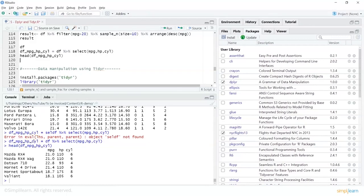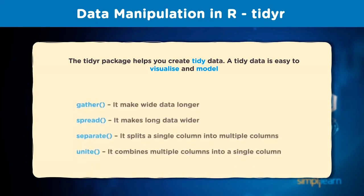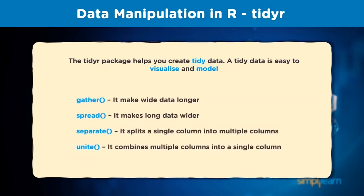There is also a package called tidyr, and we'll see how data manipulation can be done using it. The tidyr package makes it easy to tidy your data, helping you create cleaner data that is easy to visualize and model. It comes with mainly four functions: gather(), spread(), separate(), and unite().